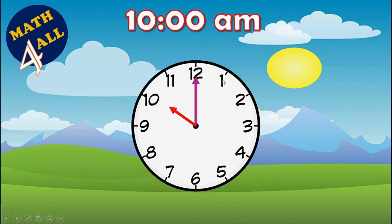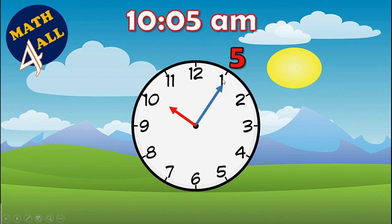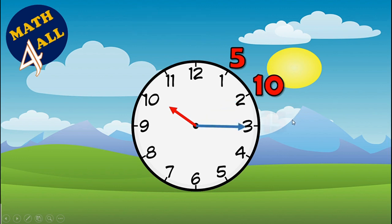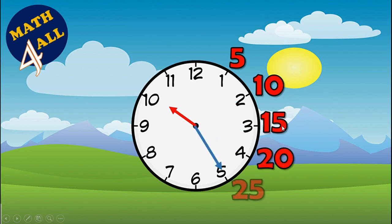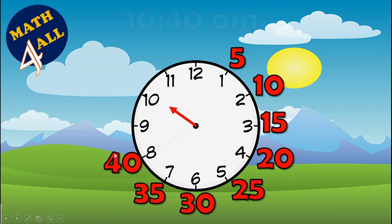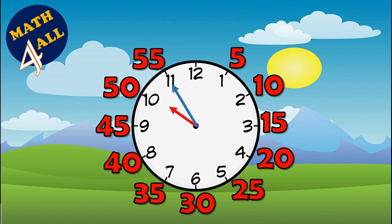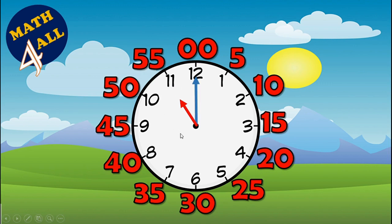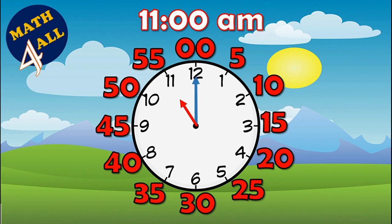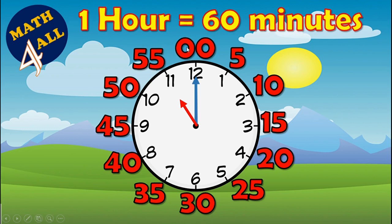As the long hand passes each number, count by fives: five, ten, fifteen, twenty, twenty-five, thirty, thirty-five, forty, forty-five, fifty, and fifty-five. After fifty-five, do you call it sixty? No — it becomes o'clock again: eleven o'clock. So in this part you learn that one hour equals sixty minutes.